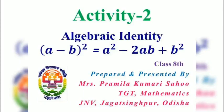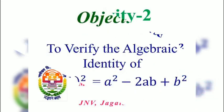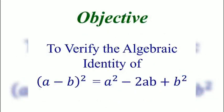Dear students, let us start the activity to verify the algebraic identity: A minus B whole square is equal to A square minus 2AB plus B square. The objective of this activity is to verify this algebraic identity geometrically.